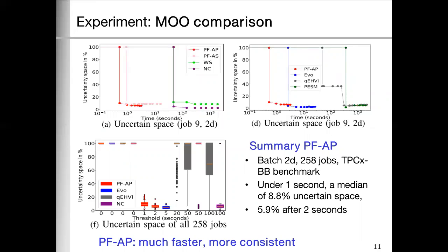Then we have to summarize the results. Over 258 batch jobs in which we use latency and cost as objectives, and we use TPC-XBB benchmark data. In all cases, PF-AP starts to run within one second. Second to it is evolutionary algorithm, which takes five seconds to get the initial result, and we know that evolutionary is inconsistent.